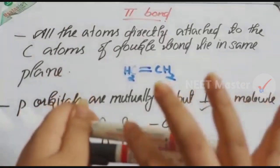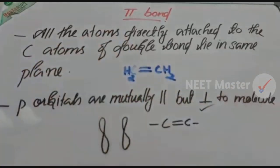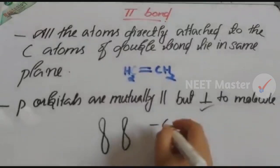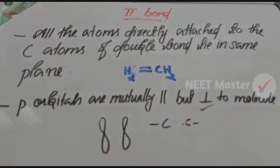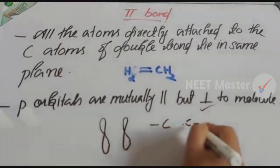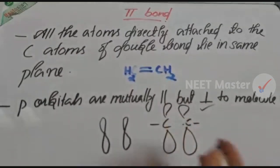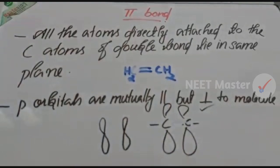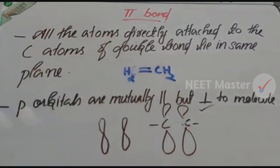Because of this pi bond, you cannot freely rotate around a C=C double bond. The two p-orbitals must remain in a perpendicular position relative to the sigma plane to maintain overlap. If you try to rotate, the p-orbital overlap breaks. That is why there is restricted rotation around the C=C double bond. These are the main characteristics of the pi bond.